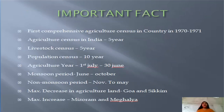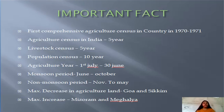Some important facts: the first comprehensive agriculture census in the country was in 1970-71. Agriculture census in India is conducted every five years, while the world agriculture census is every 10 years. Livestock census is every five years, and the population census is every 10 years. The agriculture year runs from 1st July to October. During the non-monsoon period, there is maximum decrease and increase in agriculture land.